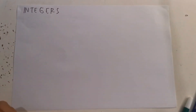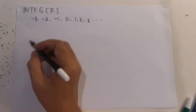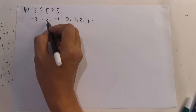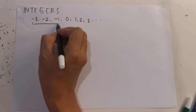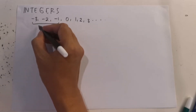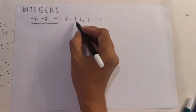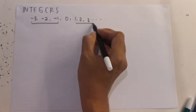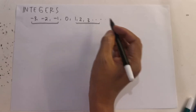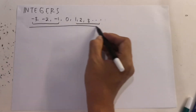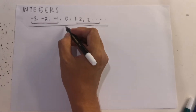What is the meaning of integers? Integers are whole numbers. For example, negative 4, negative 3, negative 2, negative 1 are called negative integers. And then, numbers 1, 2, 3 are called positive integers. Including 0, all of them are integers.